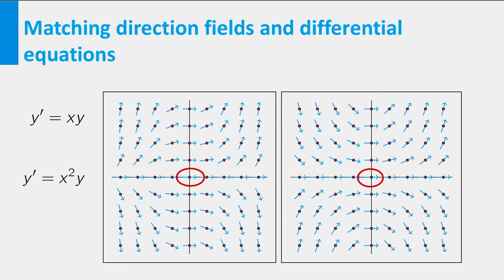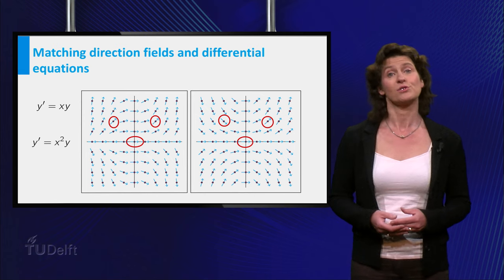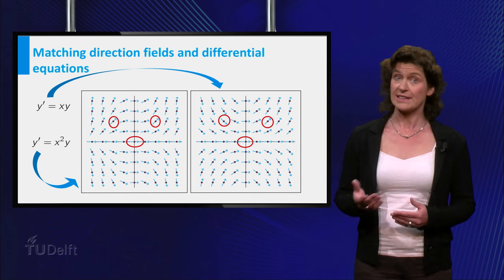Where are the differences? Well, if you look at the points 1,1 and minus 1,1, you see that in this picture the arrows have the same directions, whereas in the other picture the directions have opposite sign. So you can conclude that the first picture corresponds to the second equation.